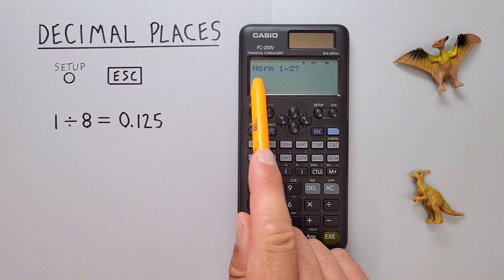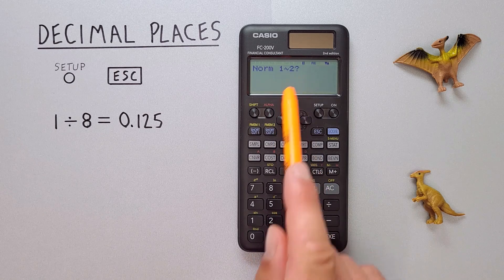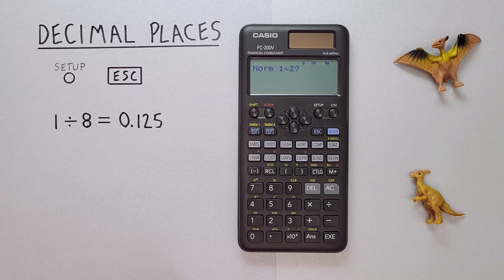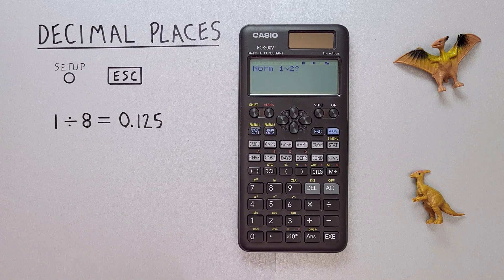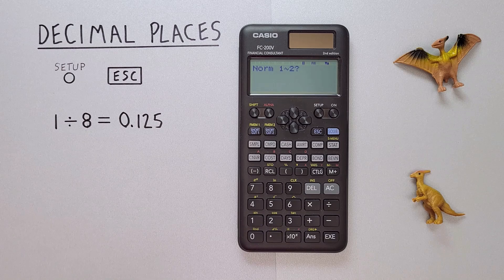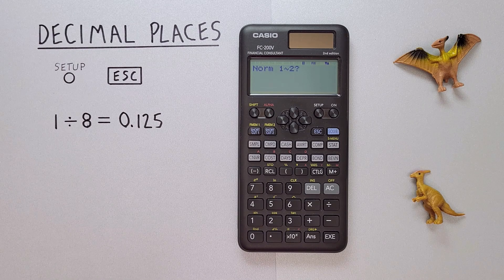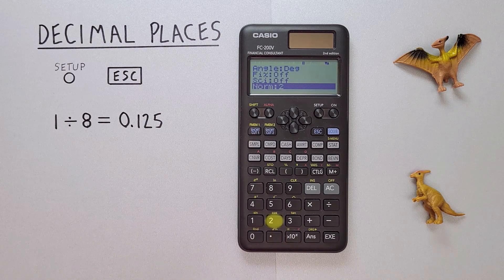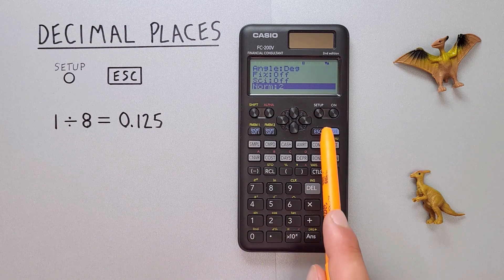we can choose between norm 1 and norm 2. I like to use normal mode 2 because that gives me all the decimals, while normal mode 1 will sometimes put our very small numbers in scientific notation. So let's select number 2 and Escape with the Escape key.